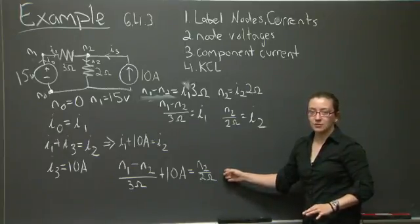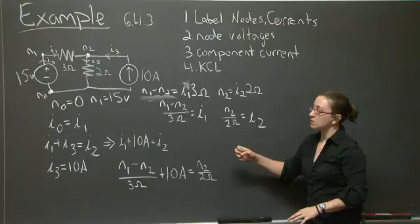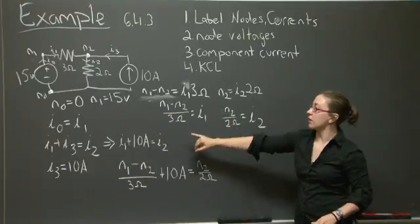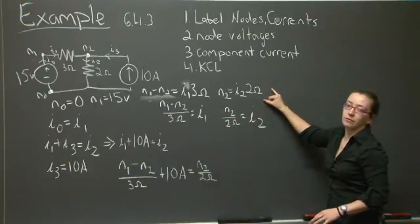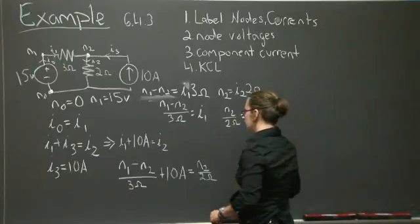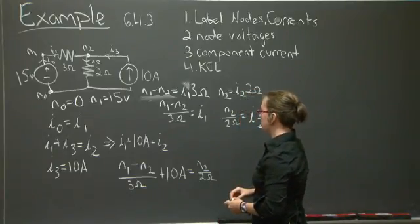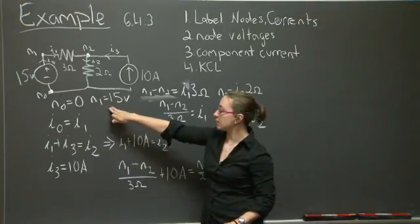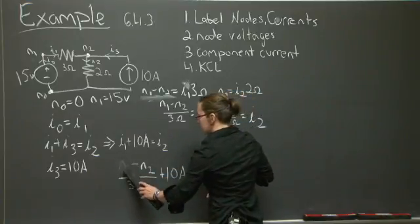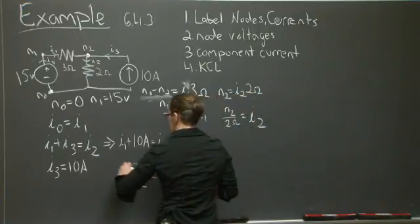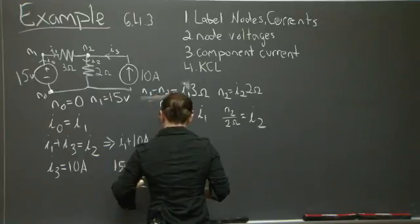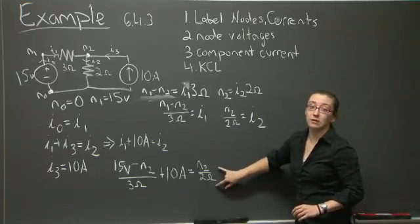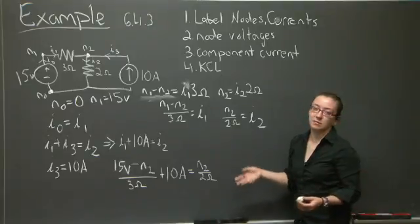This is the equation that you can jump straight to if you understand where this expression comes from as a consequence of our KCL and also our component voltages. I'm going to substitute in 15 volts for N1 here. And now I have an expression that only contains N2 and known values, so I can solve for N2. And I'll do that real quickly right now.